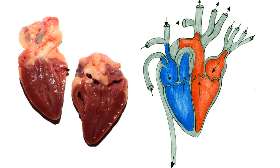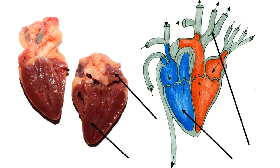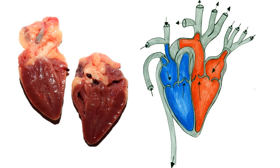In the pulmonary circulation, the blood leaves the right ventricle via the pulmonary artery towards the lungs, where it is enriched with oxygen. Then it is pumped into the left atrium from the pulmonary vein. It goes from the left atrium to the left ventricle, from whence it is pumped through the aorta into the body's circulation. While in mammals the aorta runs on the left side of the body, in birds it is on the right side.